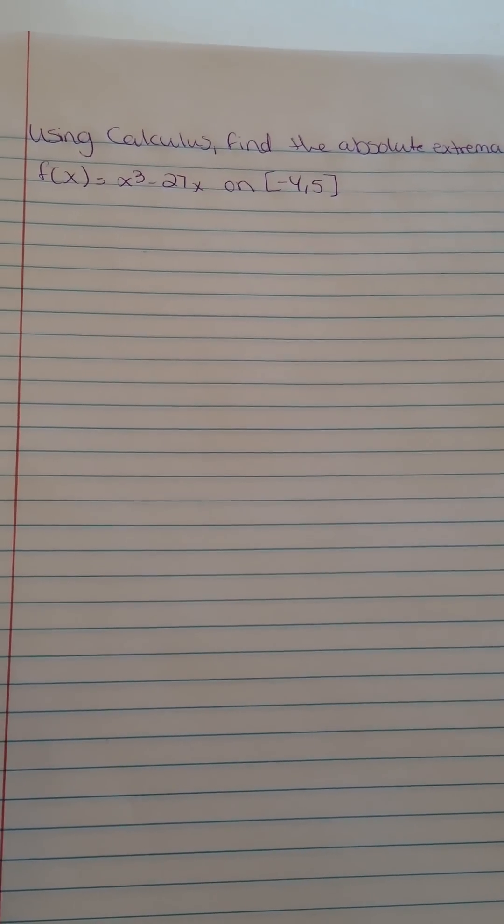Using calculus, find the absolute extrema of f(x) = x³ - 27x on [-4, 5]. It's continuous on [-4, 5], so the extreme value theorem will apply.